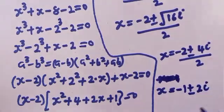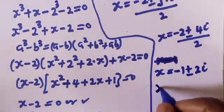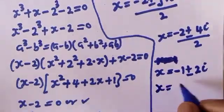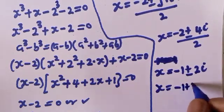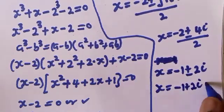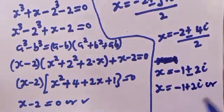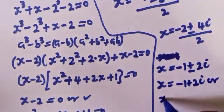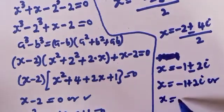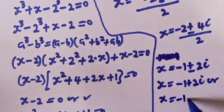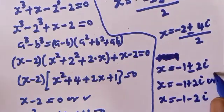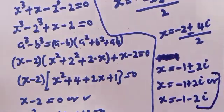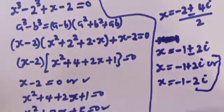The square root of negative 16 is 4i, so s equals minus 2 plus or minus 4i, over 2, giving s equal to minus 1 plus or minus 2i. These two are complex solutions.